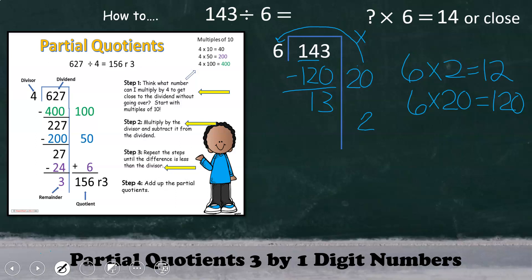And since we know that 2 times 6 equals 12, that will bring us closest to 13, then follow through with subtraction, leaving us with a difference of 1. And since our remainder is less than our divisor, we can go ahead with our last step, which is to add up the partial quotients. Therefore, we know that 143 divided by 6 equals 22 remainder 1.